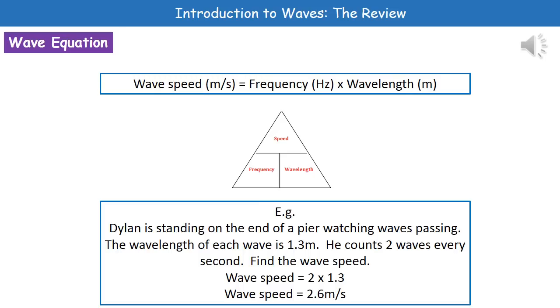To give you an example, you've got Dylan standing on the end of a pier watching the waves passing by. The wavelength of each wave is 1.3 meters and he counts 2 waves every second. Find the wave speed. We flip back to page 2, find wave speed equals frequency times wavelength. Substitute in our numbers: our frequency is 2 and our wavelength is 1.3. So 2 times 1.3—plug that into your calculator—gives you an answer of 2.6 meters per second.